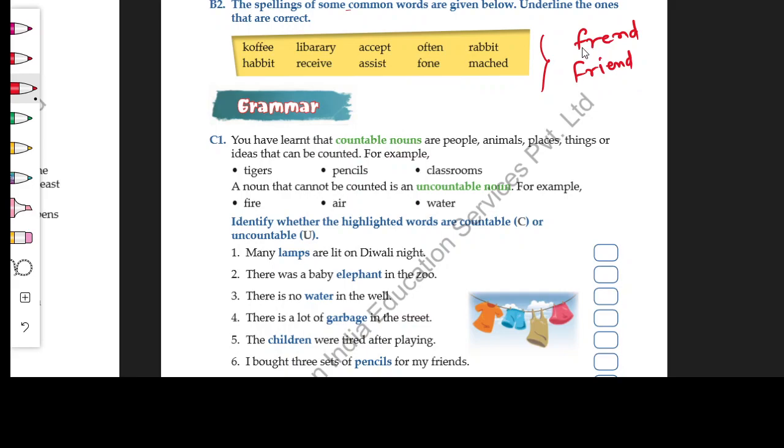Then what you'll do is cross the wrong one in your book and above it write the right spelling. So that's it for today's session. In the next session we are going to learn a bit of grammar, so see you there. Bye bye.